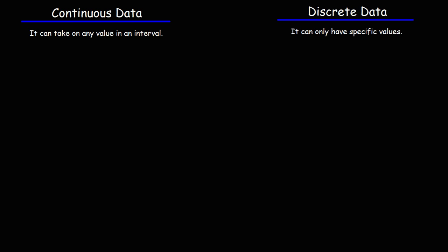In this video we're going to talk about the difference between continuous data and discrete data. Continuous data is data that can take on any value in an interval, whereas discrete data can only have specific values.